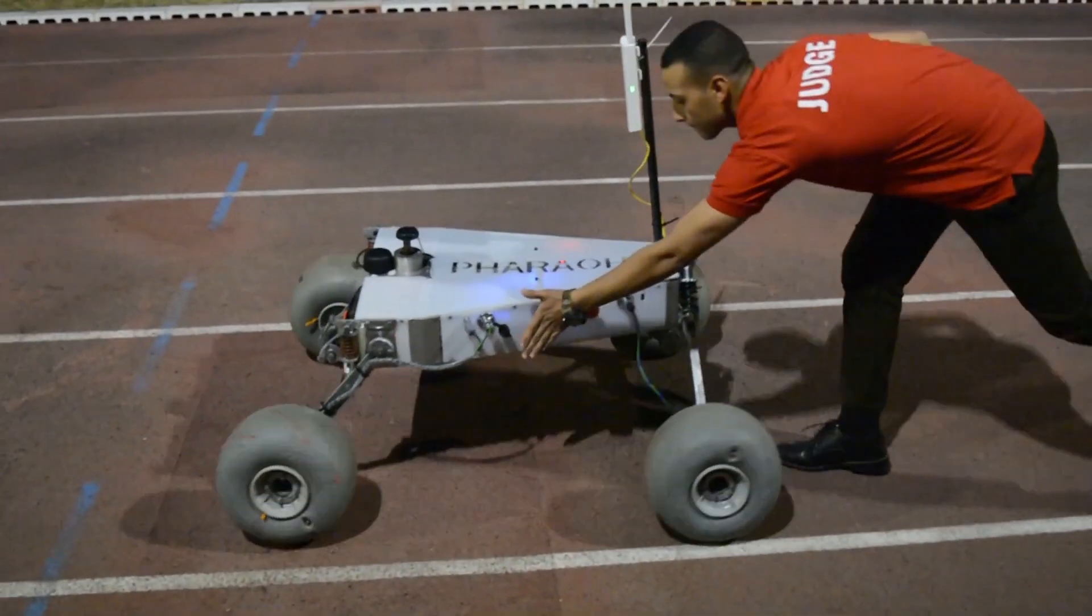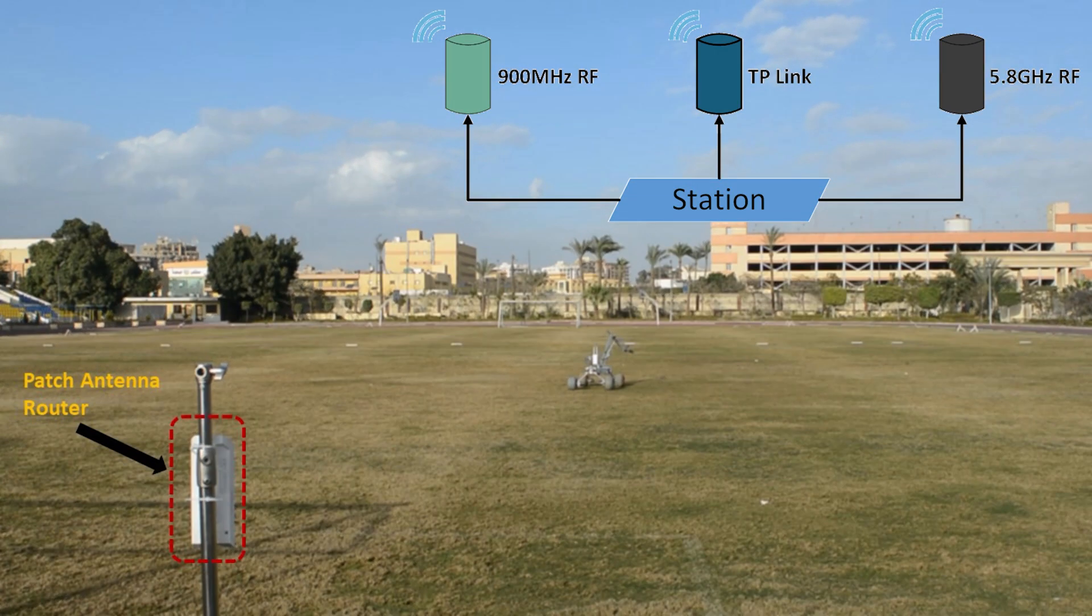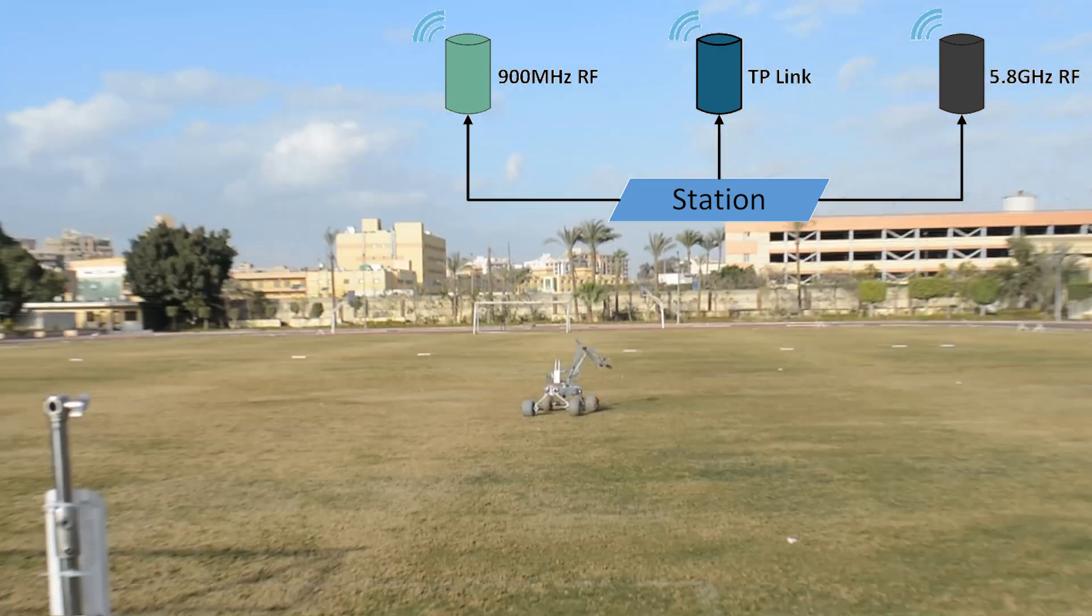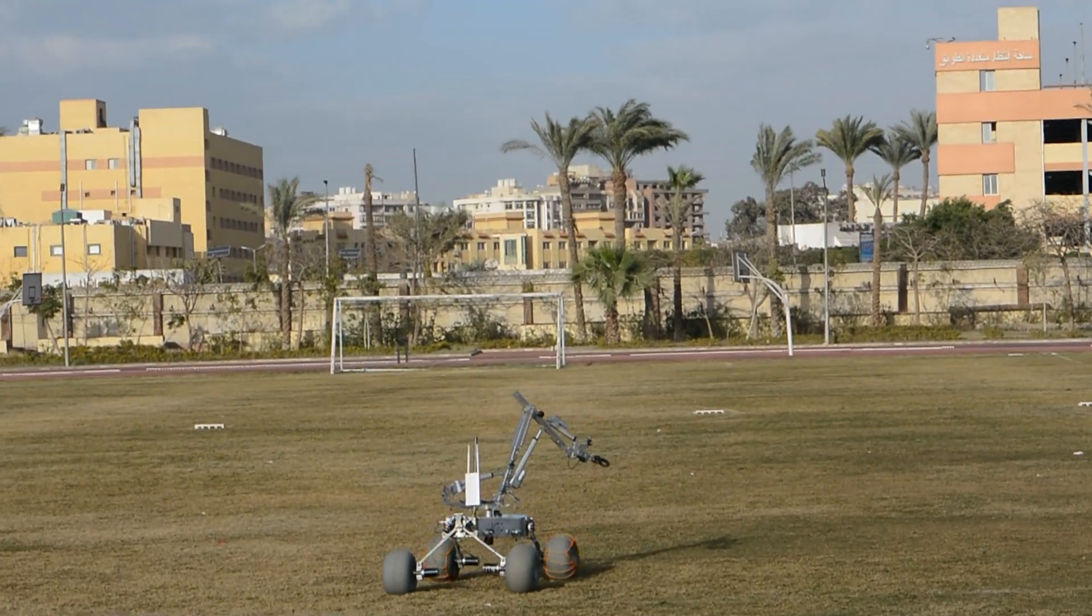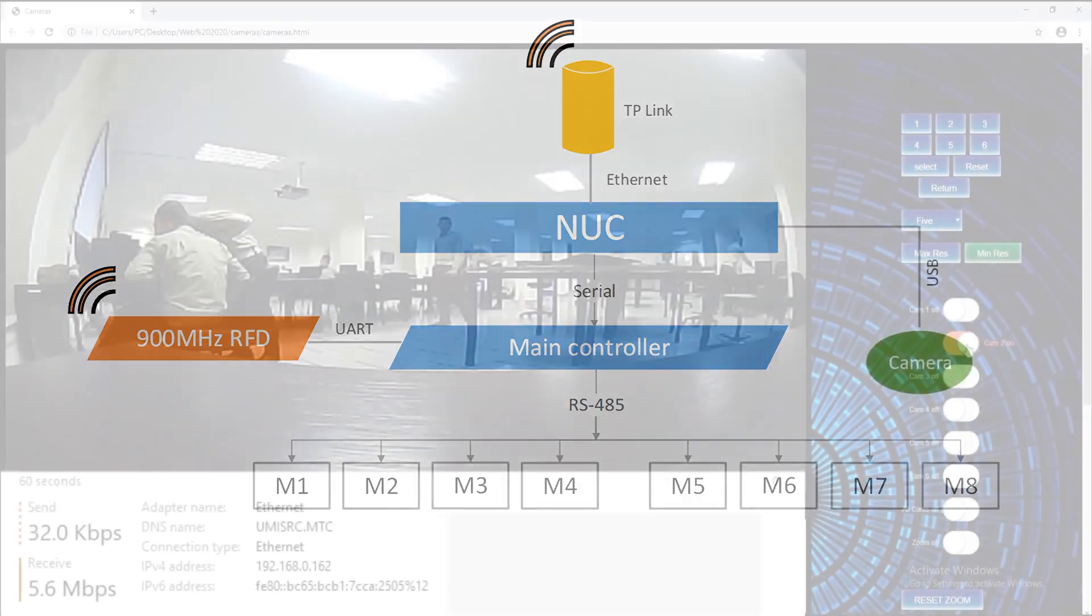The external communication is based on 2.4 gigahertz Wi-Fi and 900 megahertz RF, along with 5.8 gigahertz RF video link, while internal communication consists of Ethernet, serial UART, RS-485, and USB connections.